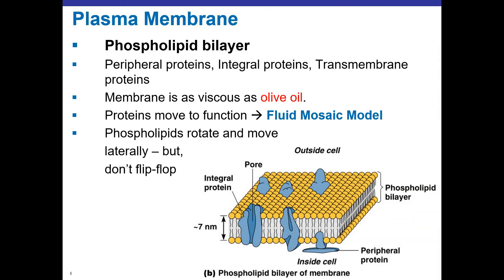The really interesting thing about the plasma membrane is that it's basically the viscosity of olive oil. That's why we refer to the dynamics of the membrane as the fluid mosaic model. Those proteins actually move — they can move from side to side and turn around. If you have a receptor, it may bind something from outside the cell and cluster other proteins together for signal transduction.